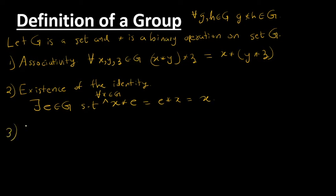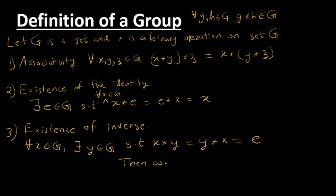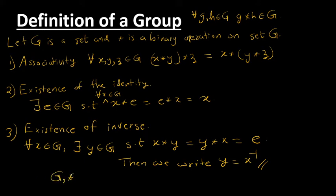The third property is existence of the inverse: for every x in G, there exists y in G such that x star y equals y star x equals E. We then call y the inverse of x, written as x inverse. If these three properties hold for a set G with a binary operation, then we call G a group under this star operation.